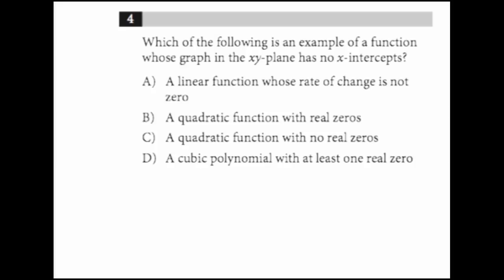An x-intercept is where the graph intersects the x-axis, and since all points on the x-axis have a y-coordinate of zero, the graph of f will cross the x-axis for all values such that f(x) equals zero.